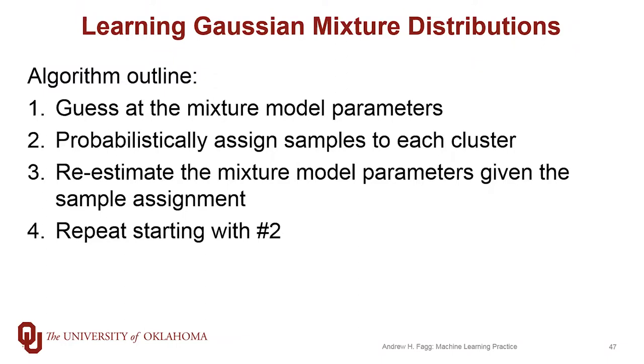We first take a guess at all of our mixture model parameters. There are good ways to take that first guess. And then we walk through all the points in our dataset and probabilistically assign them to the different clusters. So this is not the hard boundary type of assignment. We can assign a point to multiple classes with various weights.